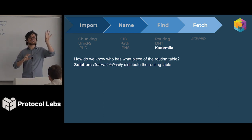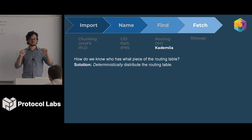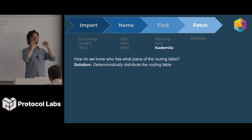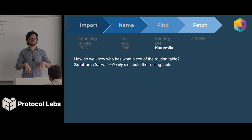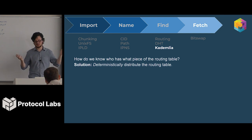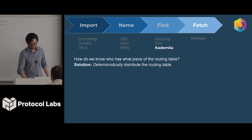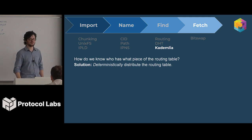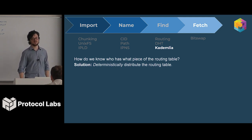So: you have some piece of content, QMFoo. You find the peer that's responsible for remembering who has QMFoo, and you tell them: I have QMFoo. Then if you're trying to find QMFoo, you find the peer responsible for remembering who has QMFoo, and you ask them who has it. They tell you someone — usually a lot of people.